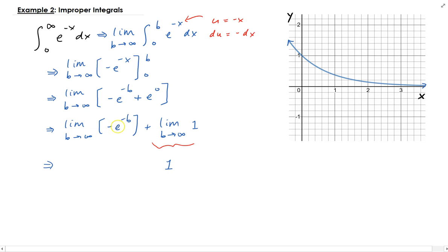This is e to the minus b, which is the same as saying one over e to the b. As b approaches infinity, this is going to give you a large number. You get one over a large number, or one over infinity, so the whole expression will go to zero. We actually get zero here.